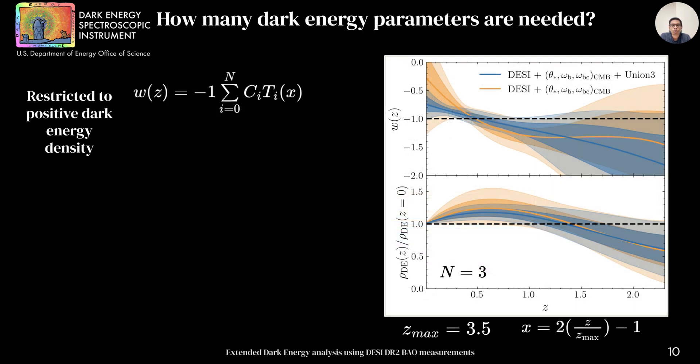Rather than restricting ourselves to two parameter extension, we can introduce more degrees of freedom to see what kind of trends data prefer. Here, we use Chebyshev polynomial to expand w of z around minus 1. In top right figure, I'm showing our results for n equals 3. In orange, we are showing without supernovae. In blue, with supernovae included, the black dashed line shows predictions for lambda CDM.